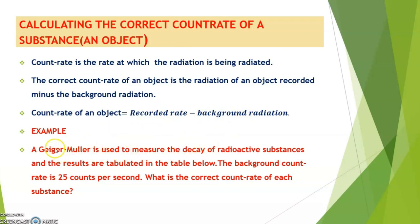A very good example that we are going to look at is this one. A Geiger counter is used to measure the decay of radioactive substances. We have a variety of radioactive substances, and the results are tabulated in the table below. There is a Geiger counter or any other instrument that is used to measure the radiations within a particular space, and it is found that the background rate is 25 counts per second.